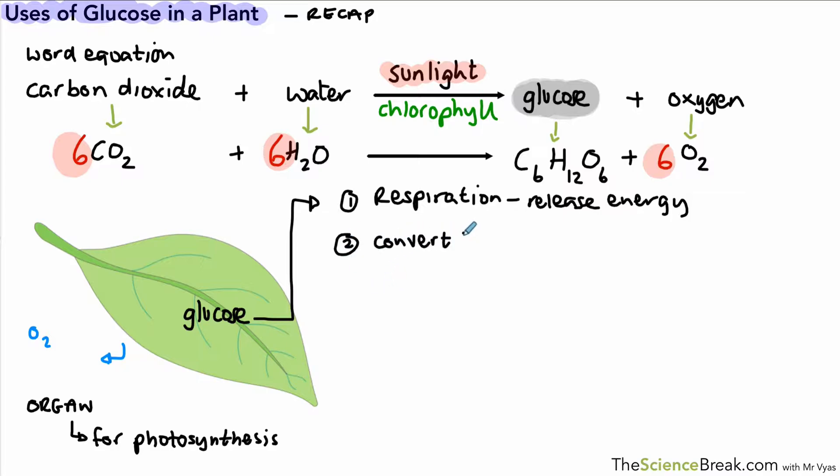Now, plants usually produce more glucose than they immediately need, so some of it is stored away. So it's converted into a substance called starch which is insoluble. It doesn't dissolve in the cytoplasm so it will stay where it is once it's been stored away in cells.